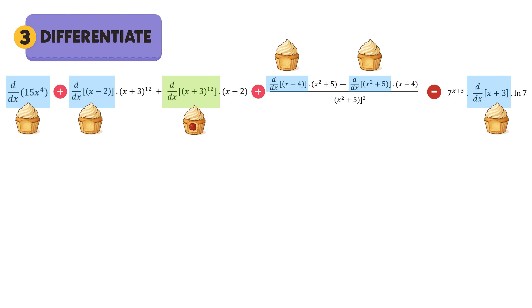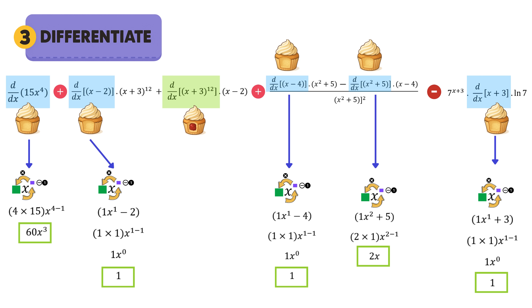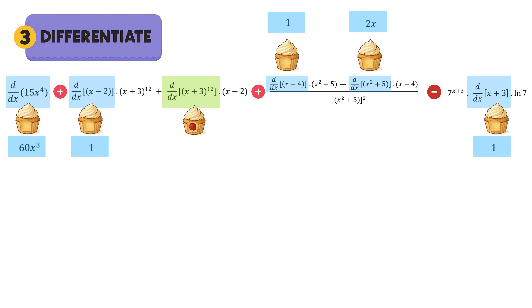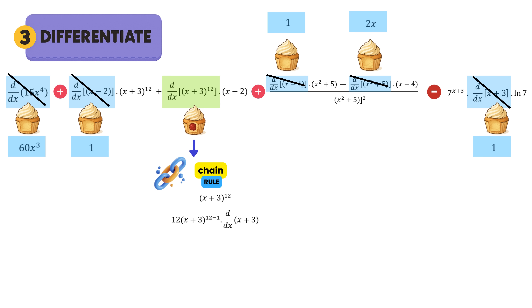Let's start by differentiating all the simple functions using our usual circle method. Pause the video and see if you get the same answers. Very important: if you're struggling with the circle differentiation method, go back to the previous videos where we broke it down step by step. We've now finished all our simple functions, so we can plug those answers back into their places. Next, we tackle the composite function using the chain rule: take the power 12, multiply it by the bracket keeping it exactly the same, subtract 1 from the power, then multiply by the derivative of the bracket. After simplifying, this is the answer we get.